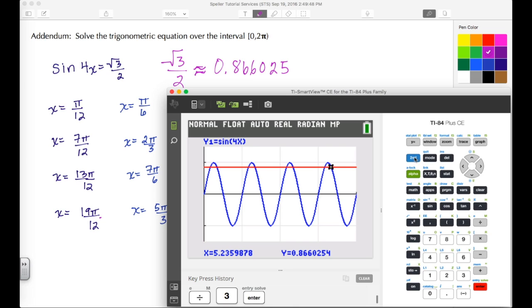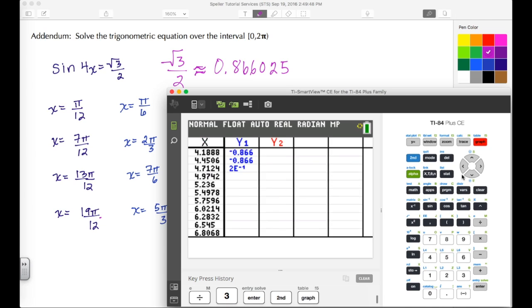Another way you could have verified your answer using the calculator was to use the table. You go to second and then table. You need to make sure you have the proper deltas, so go to second and then table set.